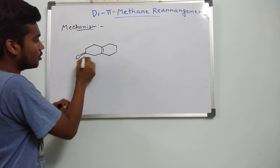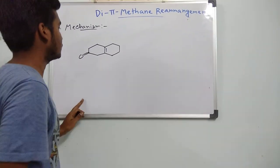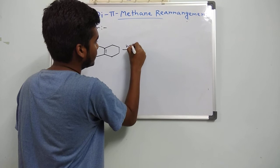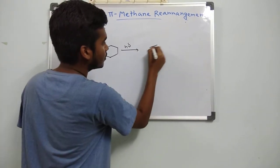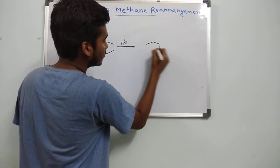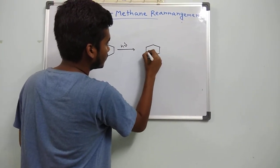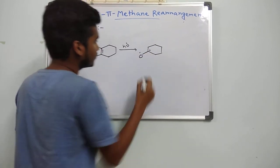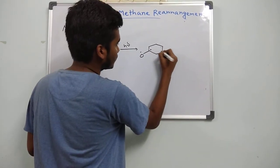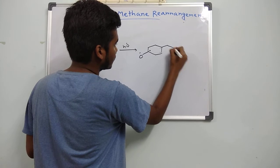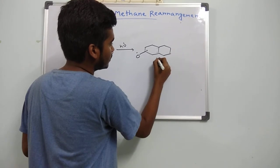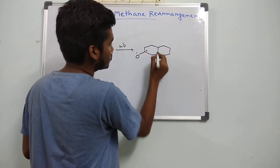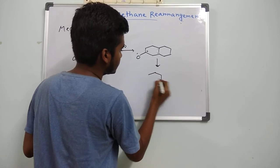Now I am going to the next example. Here, instead of one double bond, we are using a carbonyl group. So first, in place of hν, this type of product will be formed. And then these two will combine to each other.